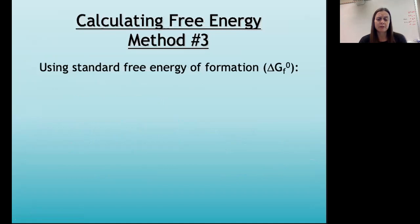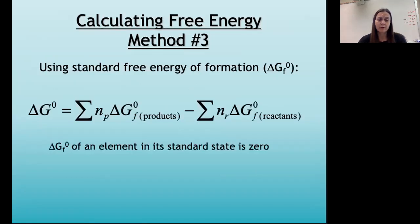The final method is the one we've used for both enthalpy and entropy. We can find the standard free energy of a reaction by subtracting the sum of the free energies of the reactants from the sum of the free energies of the products. And just as with enthalpy, the standard free energy of formation of an element in its standard state is zero. Remember, that's not the case for entropy, but it is the case for both enthalpy and free energy.